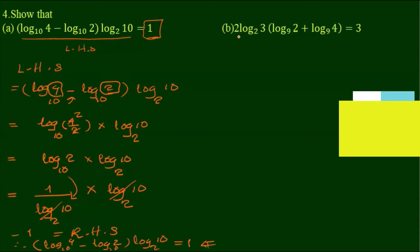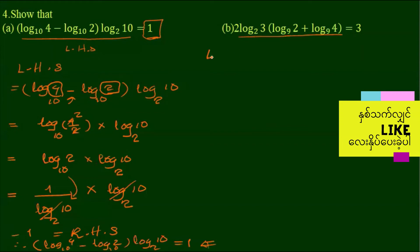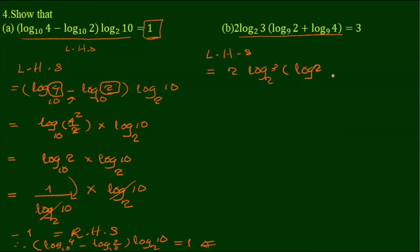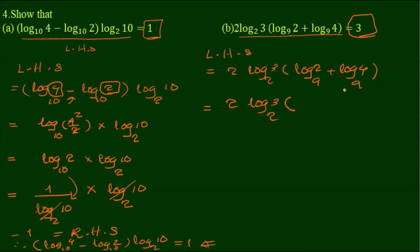The right-hand side: log 3 base 2 times log 2 base 9, plus log 4 base 9. So the right-hand side is 3. This gives us 2 log 3 base 2 times log, adding log 4, and the right-hand side is equal to 3.